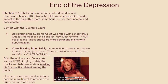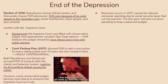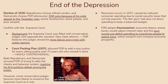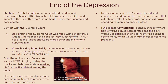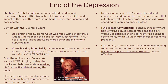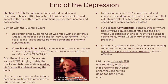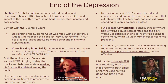However, some conservative judges did end up becoming more liberal in order to preserve the Supreme Court as it was. Just as the depression was starting to die down, a recession occurred in 1937 caused by reduced consumer spending due to social security taxes that cut into payrolls, while the federal government also had to cut spending to keep a balanced budget. To prevent this recession from getting worse, FDR adopted Keynesianism — an economic theory where banks would adjust interest rates and the government would use deficit spending to incentivize people to spend more. Critics of New Dealers said they were spending too much, so the Hatch Act was passed to stop corruption, but it didn't really do much. Your key takeaway should be that although FDR was relatively bipartisan, both sides thought he was doing too little or too much, when in reality he was just trying to make the best of a really unprecedented situation.